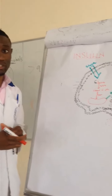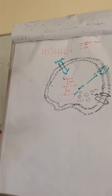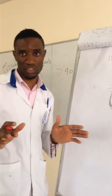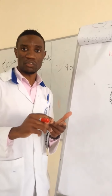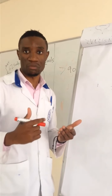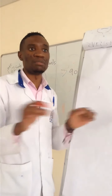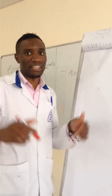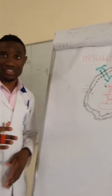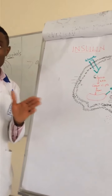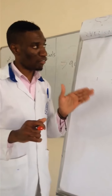Insulin is secreted by special cells that belong to a group of cells called the Islets of Langerhans — simply a cluster of cells. These include the alpha cells, the beta cells, the delta cells, and all these individual cells secrete different hormones. The beta cells are found in the center. Beta cells secrete the hormone known as insulin, while other cells like alpha cells secrete the glucagon hormone.